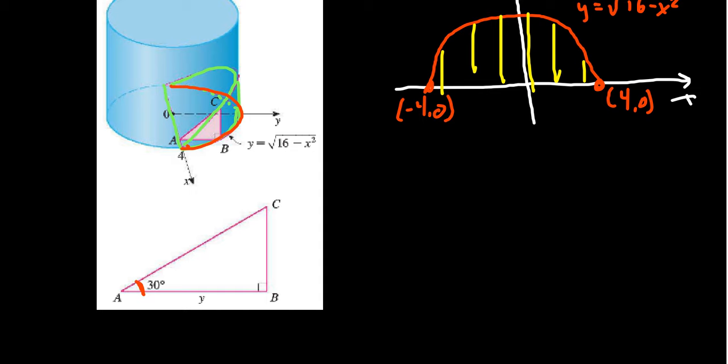And so these cross sections. Let me clean this thing up a little bit. If we now focus on the cross section right here, we have to find the area of the area of a triangle. It's a right triangle. So the area is going to be one half base times height, where here is your base and here is your height.